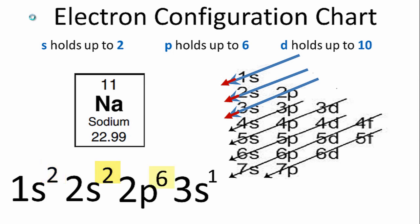If you add those numbers up now, 2 plus 2 plus 6 plus 1, you get 11. So this is the electron configuration for sodium.